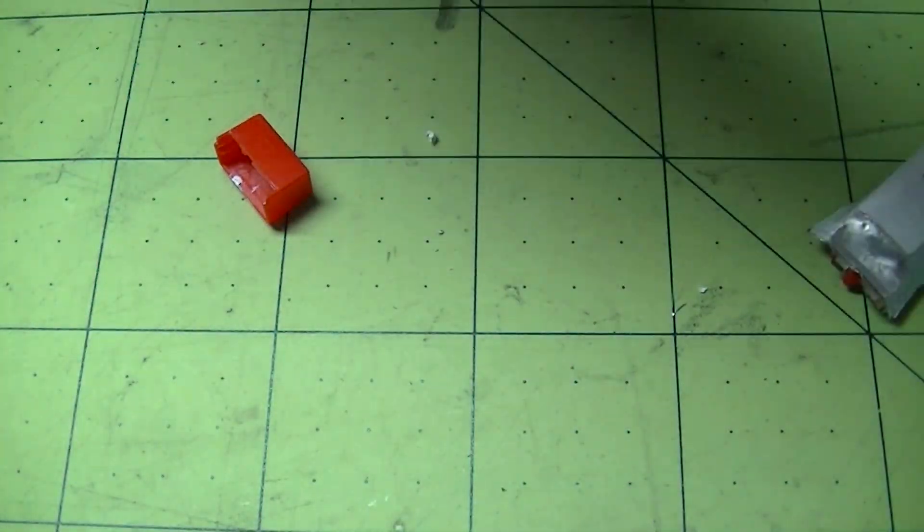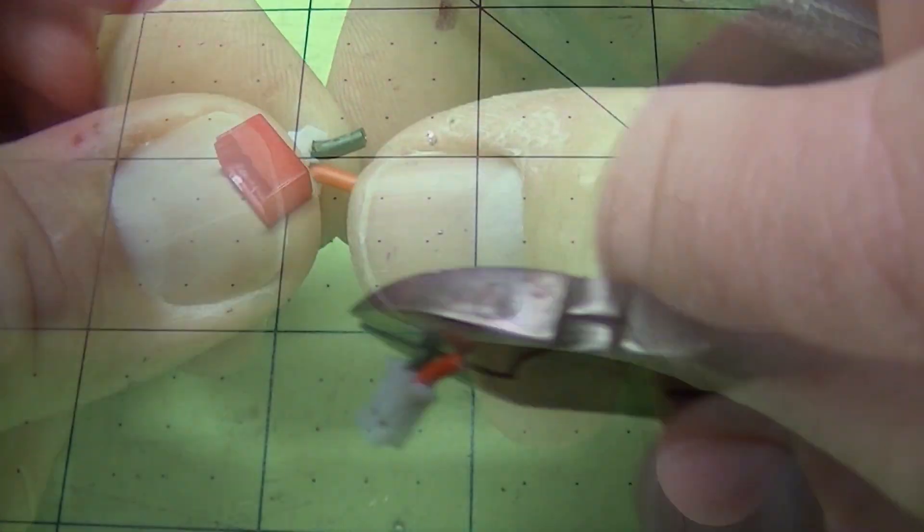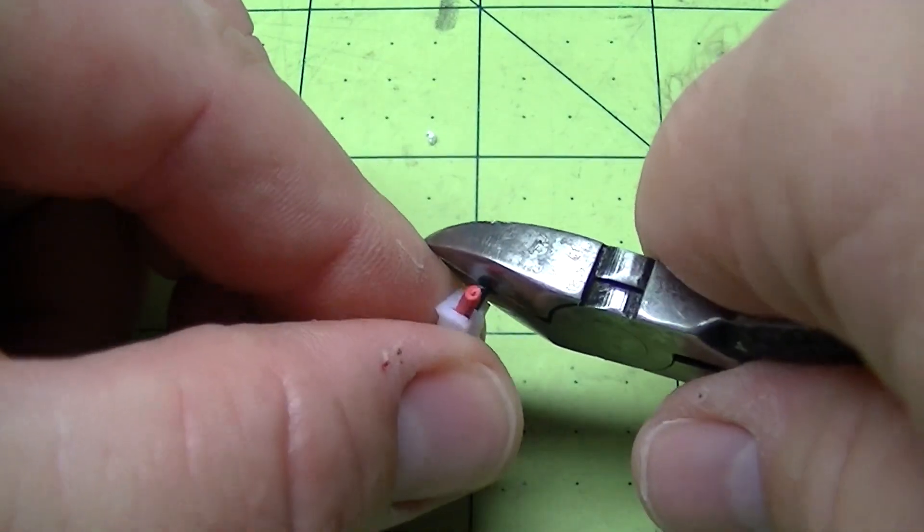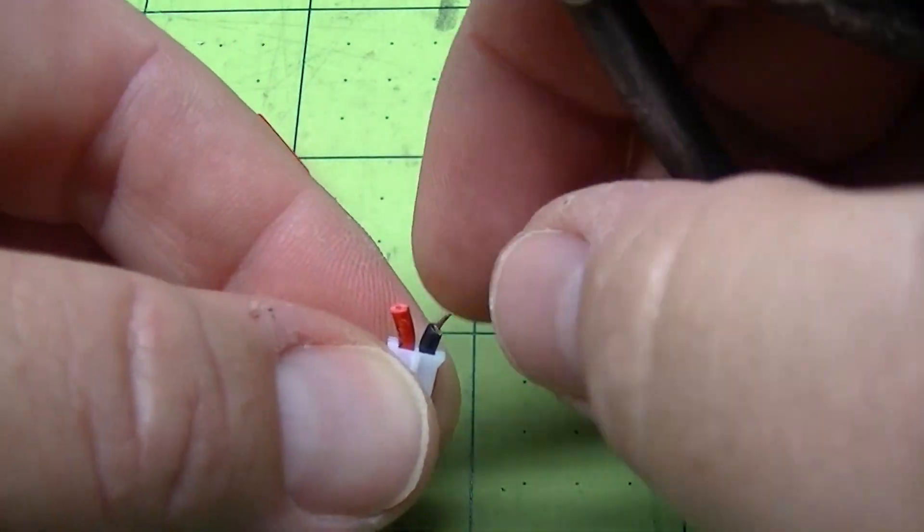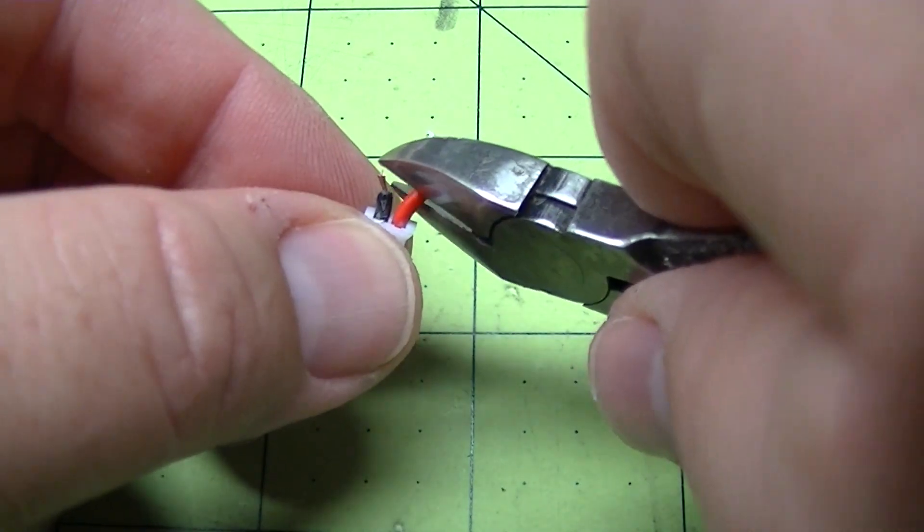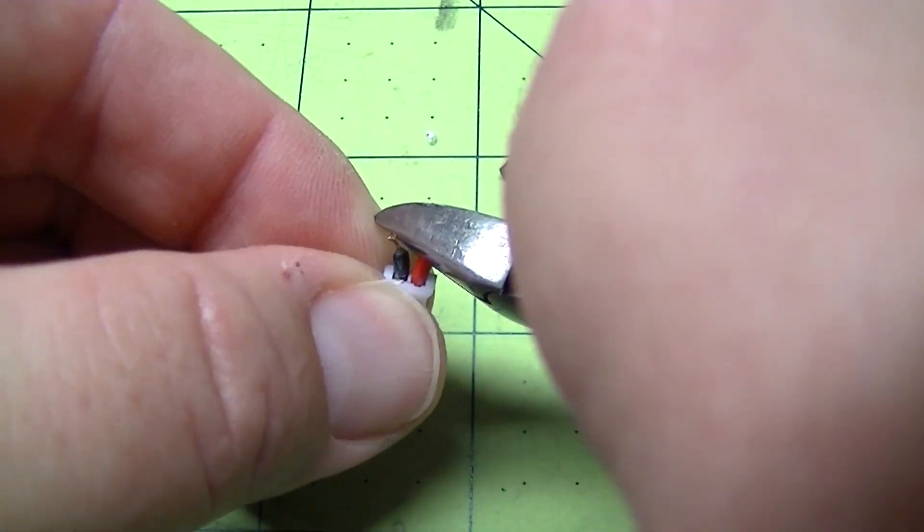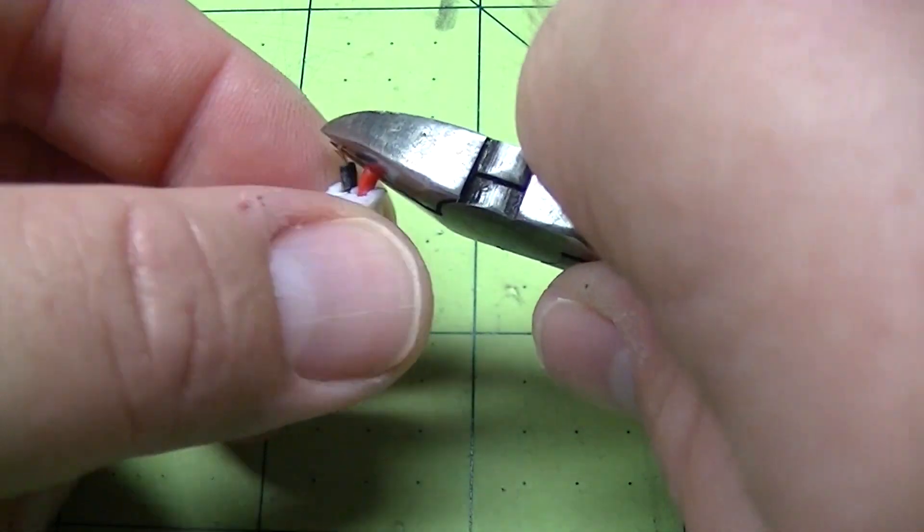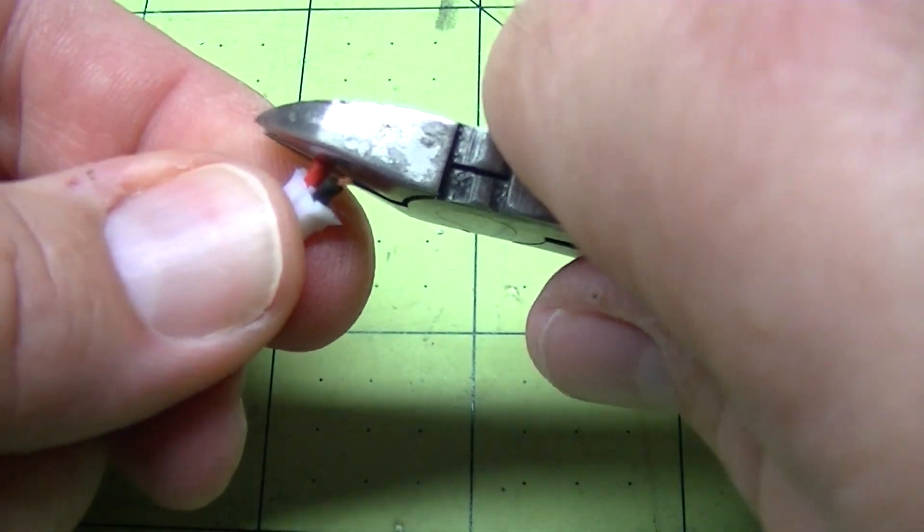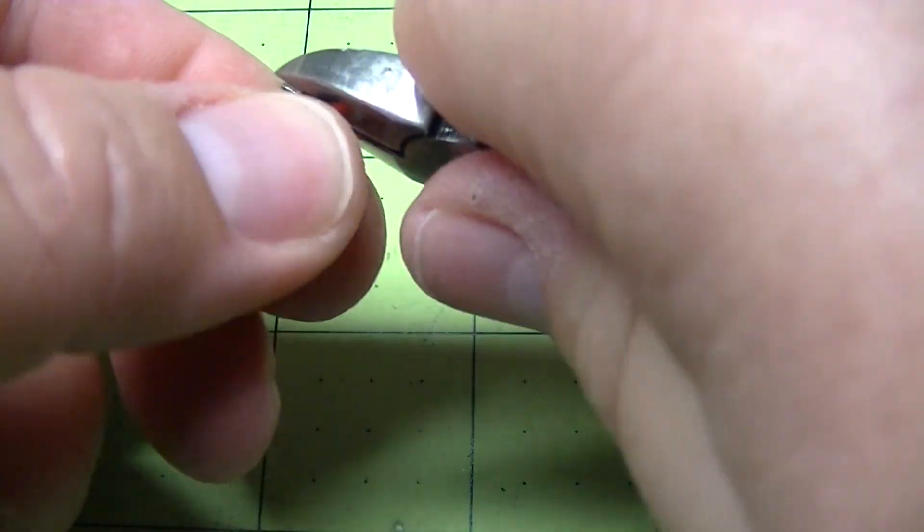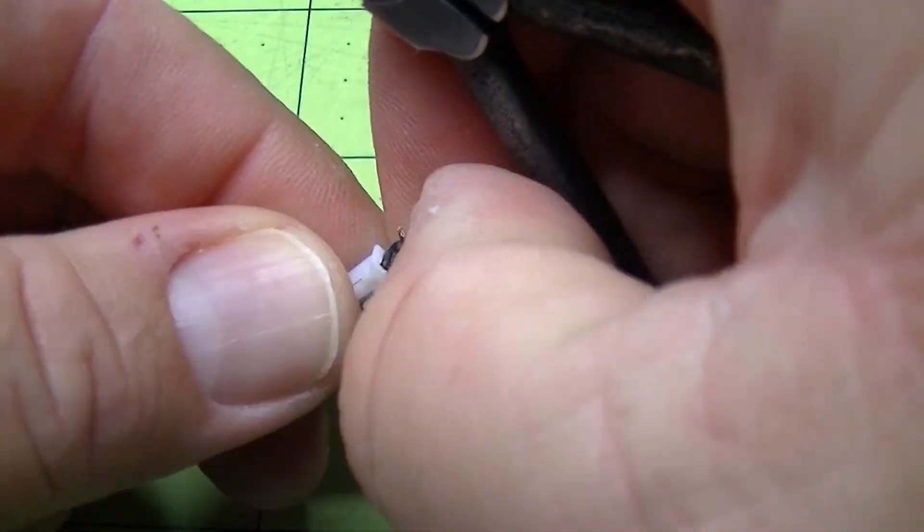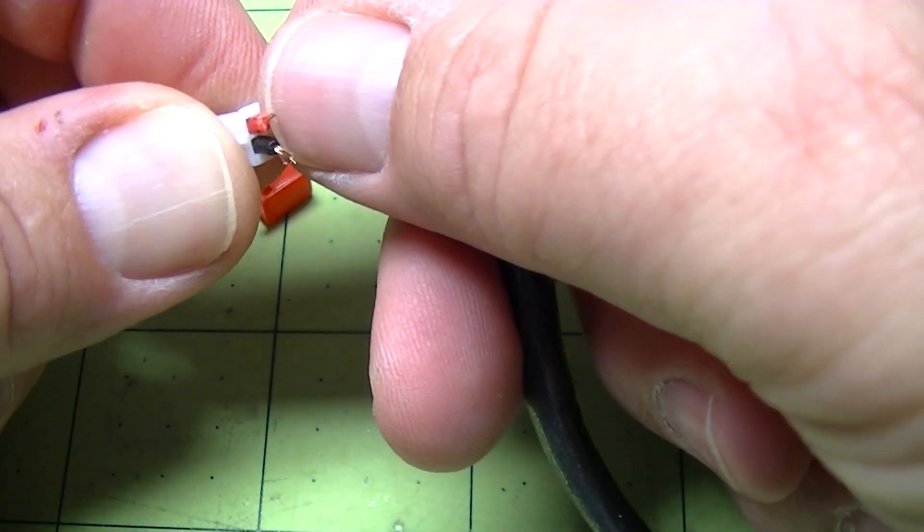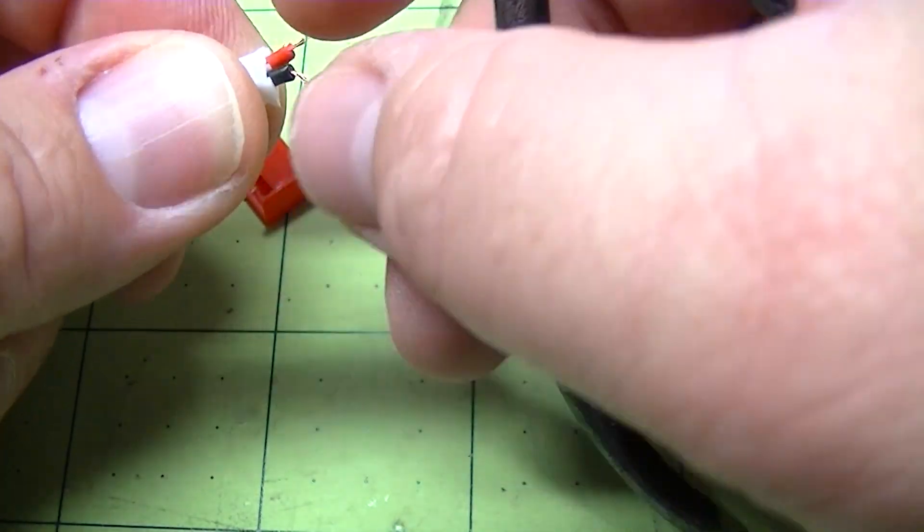Now the tricky part is getting this insulation off. Because of the type of wire I've got here, the insulation on here, I can just work it around. I can hear that little pop and it's separated. There it is. And then you can push that back on if you need to.